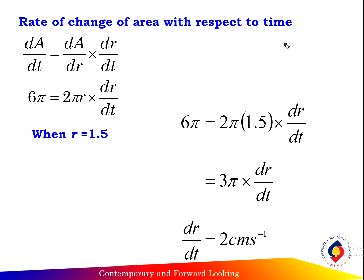So dA over dt equals 65 centimeters square per second, and dA over dt equals dA over dr times dr over dt. The area with respect to the radius equals 2 pi times the radius, times dr over dt.